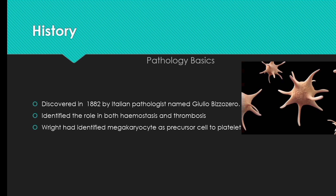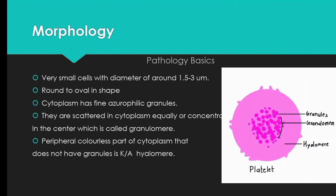Platelets were discovered in 1882 by Italian pathologist Giulio Bizzozero. He identified the role of platelets in both hemostasis and thrombosis. Wright had identified that the megakaryocyte is the precursor cell of the platelet.